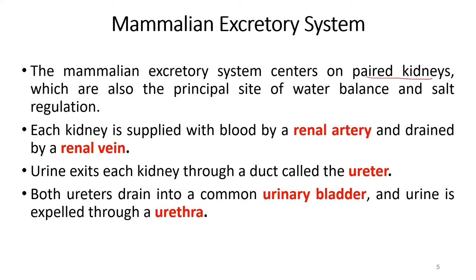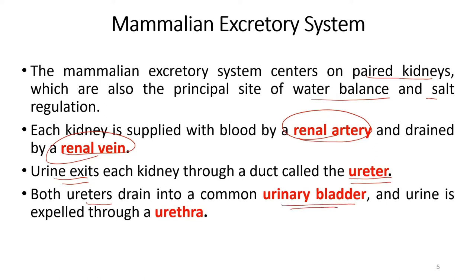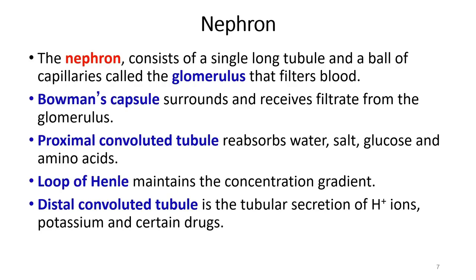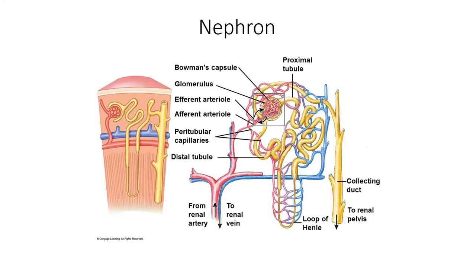Humans, as vertebrates, have a pair of kidneys to control water balance and salt. Each kidney is supplied with blood by a renal artery and drained by a renal vein. They also have a ureter to carry urine out, and both ureters drain into a common urinary bladder for storing urine. Each nephron consists of a single long juxtamedullary tubule and a ball of capillaries called the glomerulus that filters blood.